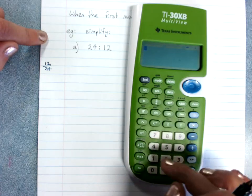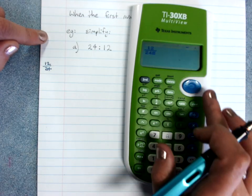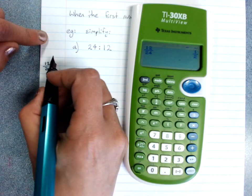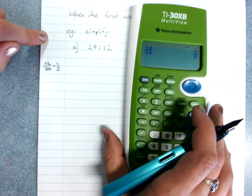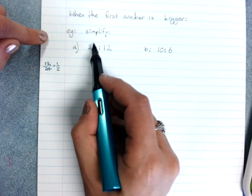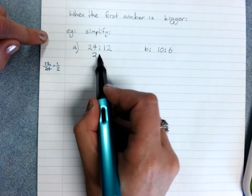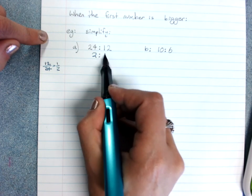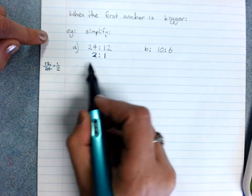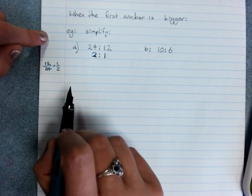Get the answer for 12 over 24. That's 1 over 2. And then when you go back to your ratio, the big numbers first, we put the big number first. Then the small number. So we've got to change the order when we do this, just to be a little bit sneaky.